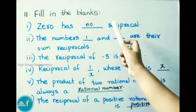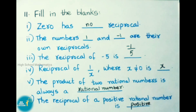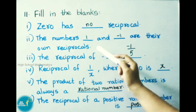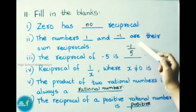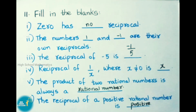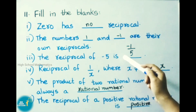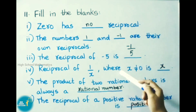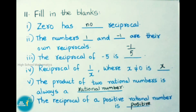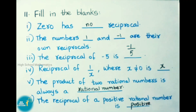Question number 11, fill in the blanks. (1) 0 has no reciprocal. (2) The numbers 1 and -1 are their own reciprocals. (3) The reciprocal of -5 is -1/5. (4) The reciprocal of 1/x, where x ≠ 0, is x. (5) The product of two rational numbers is always a rational number. (6) The reciprocal of a positive rational number is positive.